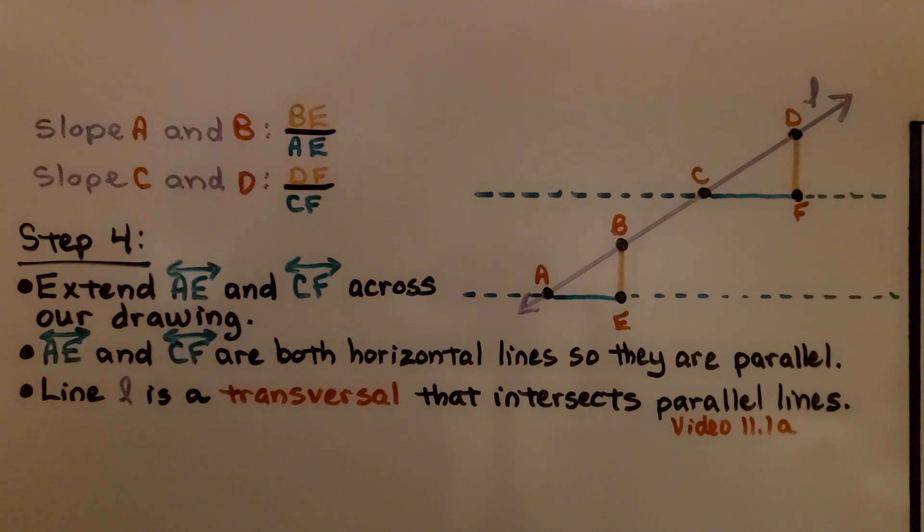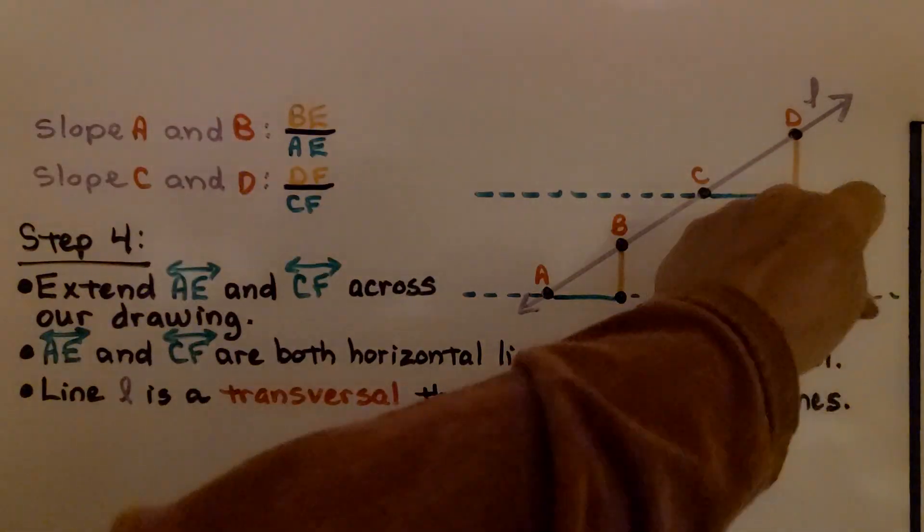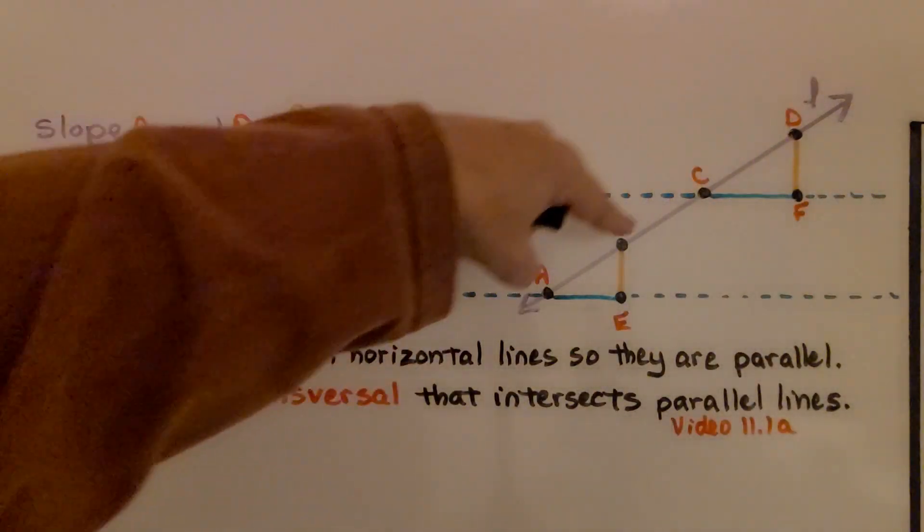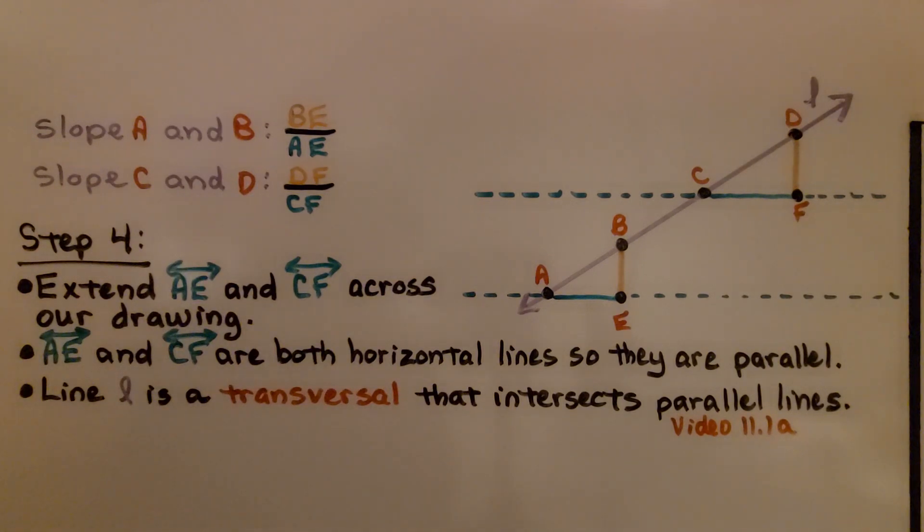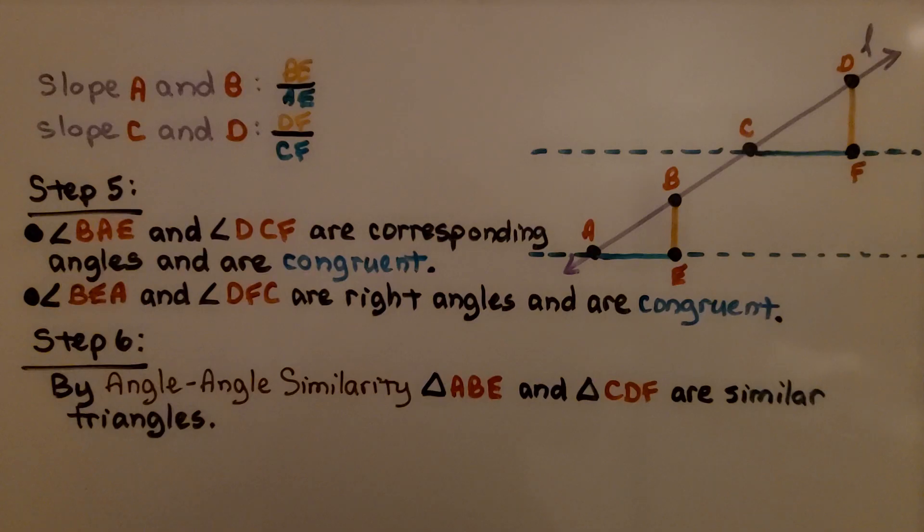Line L is a transversal that intersects parallel lines. So here we have our two parallel lines, and we have our transversal cutting through the parallel lines. If you don't know what transversals are, or if you don't remember, we did that in video 11.1a.